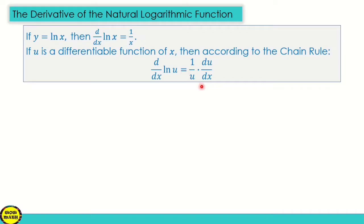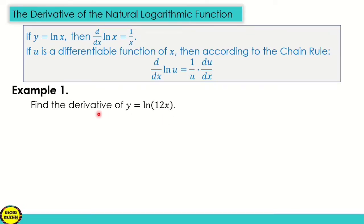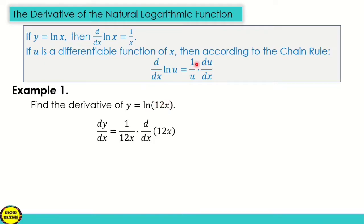We will follow this formula to find the derivative of natural logarithmic functions. For example, number 1: find the derivative of y is equal to ln of the quantity 12x. So our u here is 12x. So dy/dx is equal to — following our formula — 1 over 12x, times the derivative of 12x. The derivative of 12x is 12.